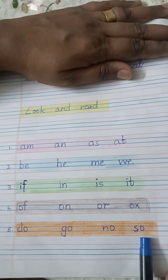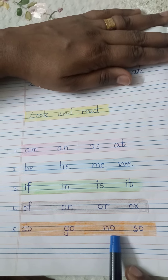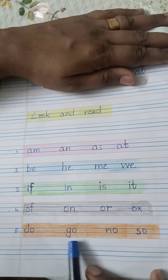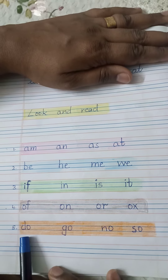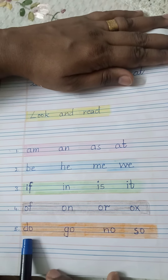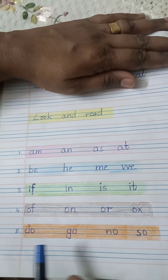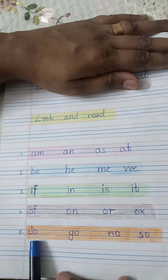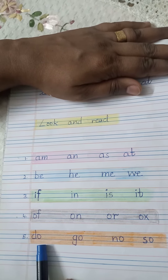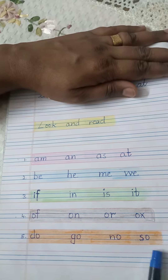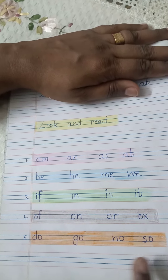S-O: SO. N-O: NO. G-O: GO. D-O: DO. The sound of O here is different — these three words have the same sound.